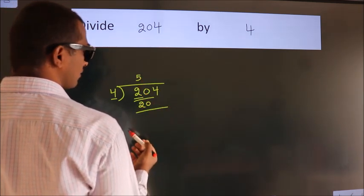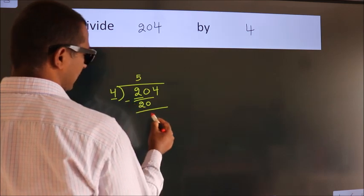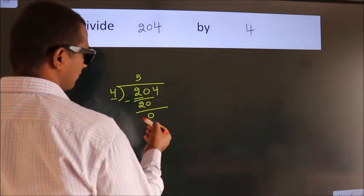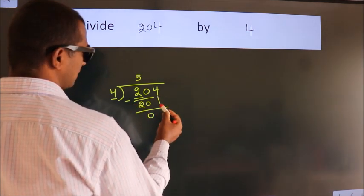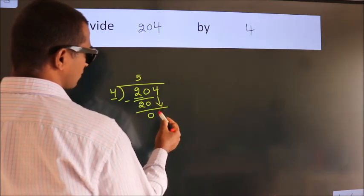Now we should subtract. We get 0. After this, bring down the beside number. So 4 down.